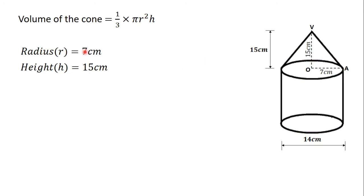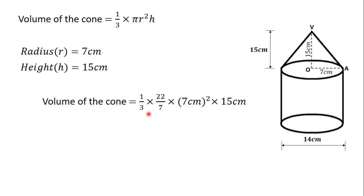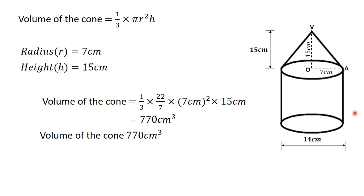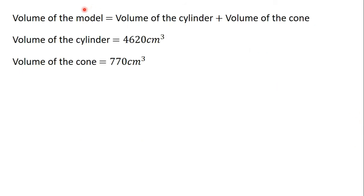The volume of the cone equals (1/3) × pi × r² × h = (1/3) × (22/7) × 7² × 15. Calculating this gives 770 cubic centimeters. The question asks us to write our answer to the nearest whole number, so the volume of the cone is 770 cm³.